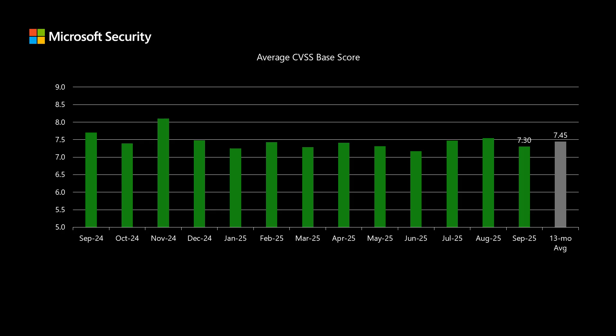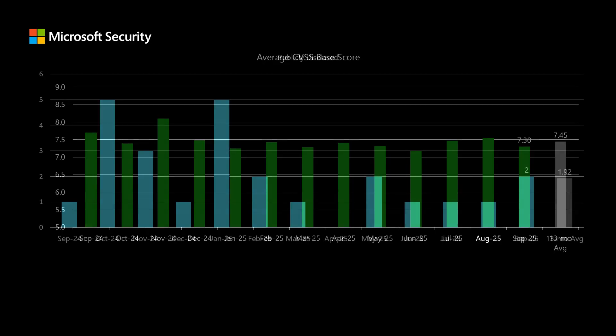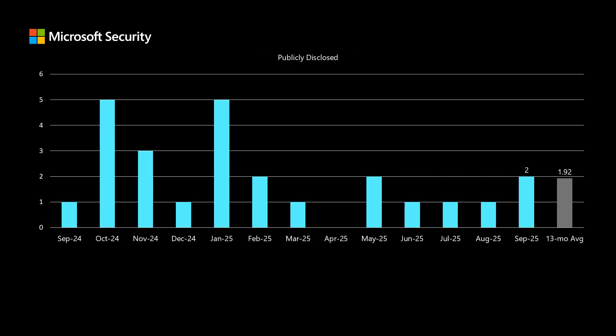Next we have severity, which Microsoft uses, and we have low, moderate, important, and critical. Not all vendors use that same methodology to rate severity, but that's not included in the CVSS score, nor is whether or not a vulnerability is publicly disclosed.